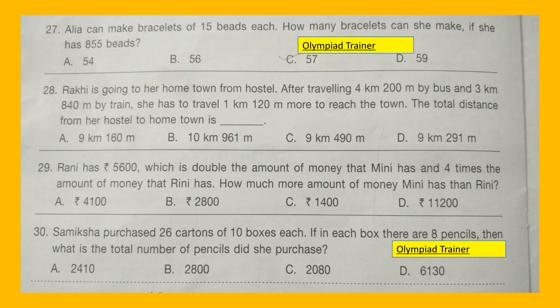Question 27: Alia can make bracelets of 15 beads each. How many bracelets can she make if she has 855 beads?